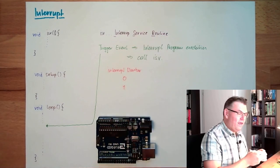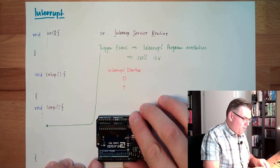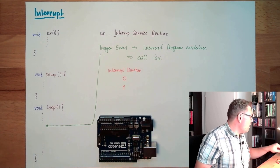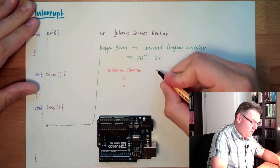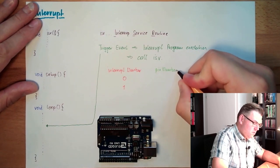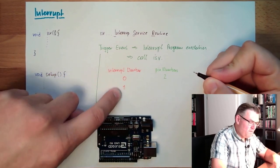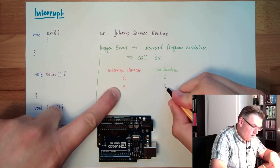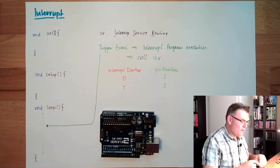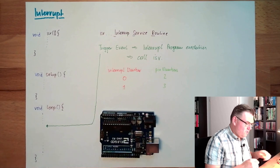Of course, it is not that easy. Interrupt number zero is not for pin number zero and interrupt number one is not for pin number one, this is not the case. According to pin numbers, the zero is on pin number two, the one is on pin number three. It's two and three. This is for the Uno.